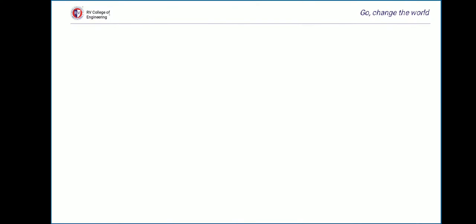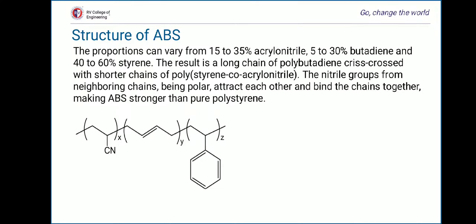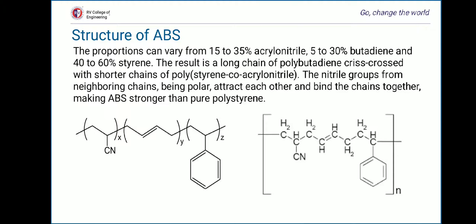Coming to the structure of ABS, the proportions can vary from 15 to 35% acrylonitrile, 5 to 30% butadiene and 40 to 60% styrene. The result is a long chain of polybutadiene crisscrossed with shorter chains of poly(styrene-co-acrylonitrile). The nitrile groups from neighboring chains, being polar, attract each other and bind the chains together, making ABS stronger than pure polystyrene.